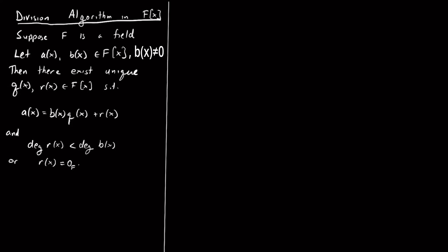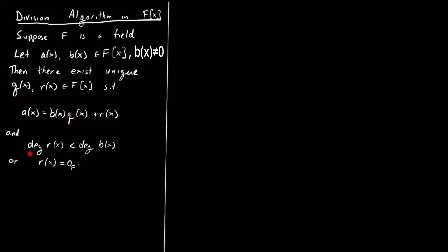So what does the division algorithm say? It says: suppose F is a field, so it takes place in F[x] — my polynomials have coefficients from a field — and let a(x) and b(x) be two polynomials in F[x]. Then there exist unique polynomials q(x) and r(x) such that a = bq + r, and the degree of r is less than the degree of b, or r is equal to zero, because we didn't assign the zero polynomial a degree.